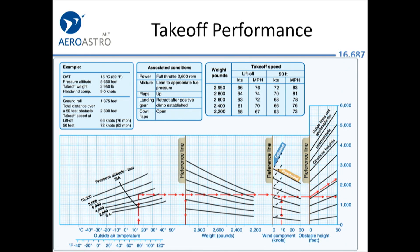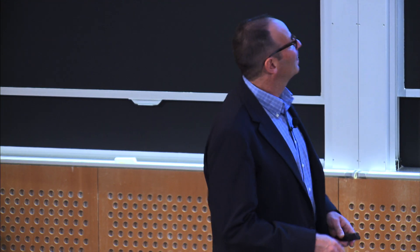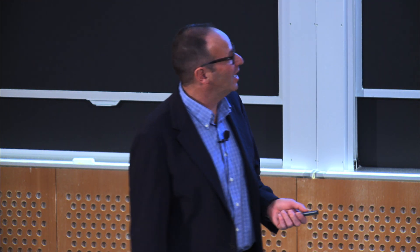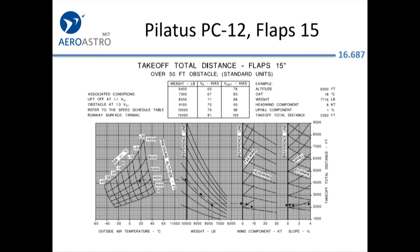These charts are not hard to use. The FAA actually gives you a worked example so you can see how it's done, then you just draw the lines in a different place. Here's a chart for the Pilatus PC-12 — similar to that Piper chart where you combine pressure altitude and temperature to implicitly calculate density altitude, then go over to weight.